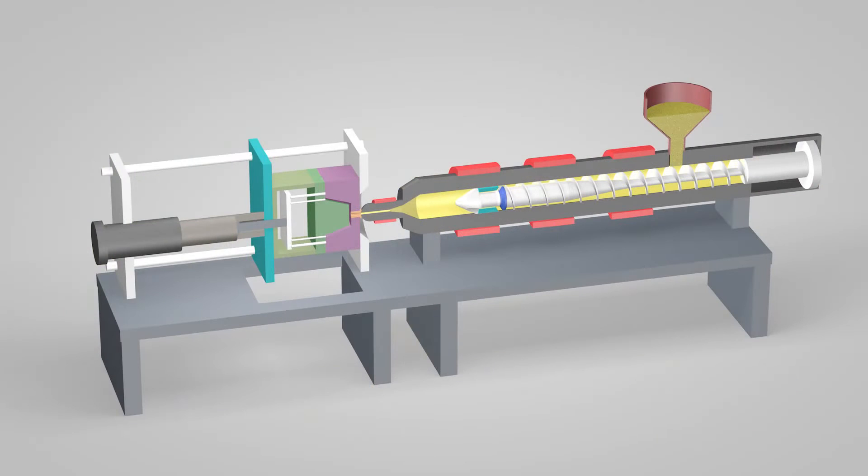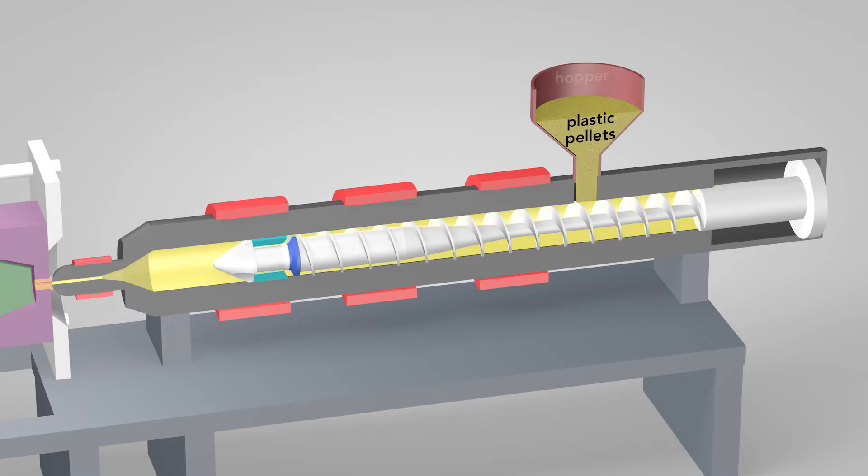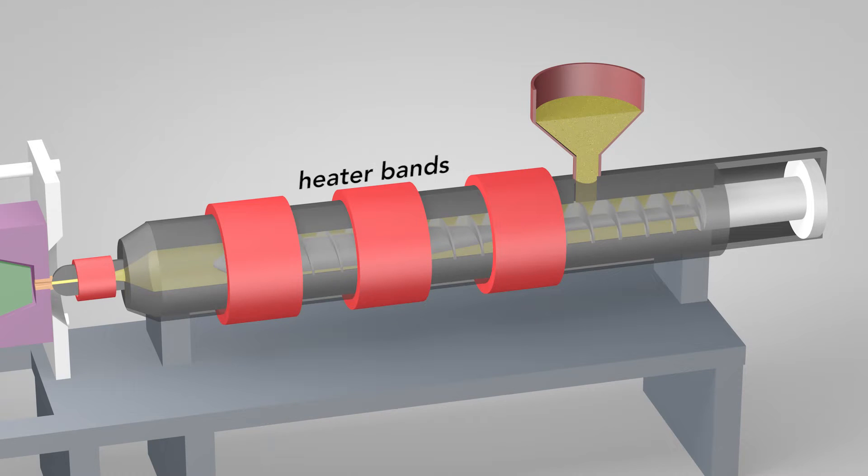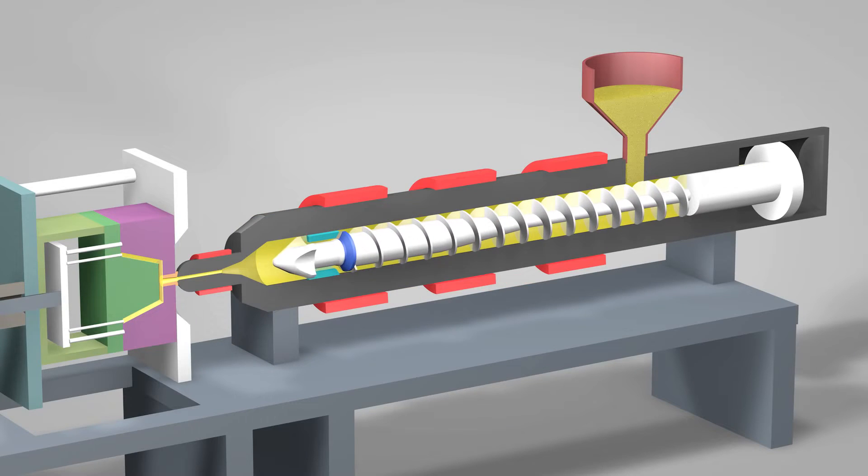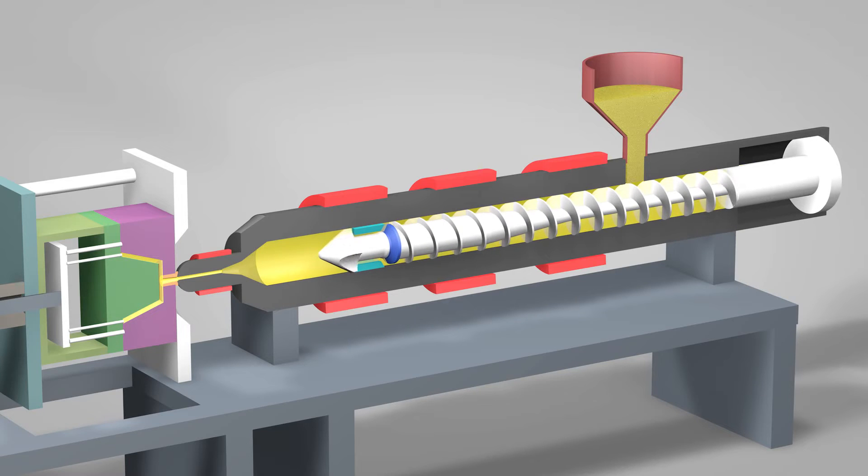An injection molding machine has three main parts: the injection unit, the mold, and the clamp. Plastic pellets in the hopper feed into the barrel of the injection unit. Inside the barrel, a screw transports the pellets forward. Heater bands wrapped around the barrel warm up the plastic pellets. As the pellets are moved forward by the screw, they gradually melt and are entirely molten by the time they reach the front of the barrel.